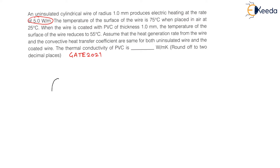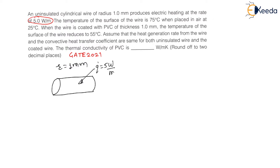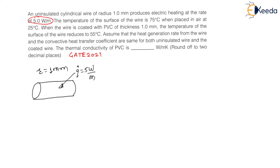The wire will be like this. Let us say this is our wire. Radius of this wire is equal to 1 mm, and heat generated inside this wire is Q-dot, which is nothing but 5 Watt per meter. It is given in per meter length. Let us say this is our first condition.